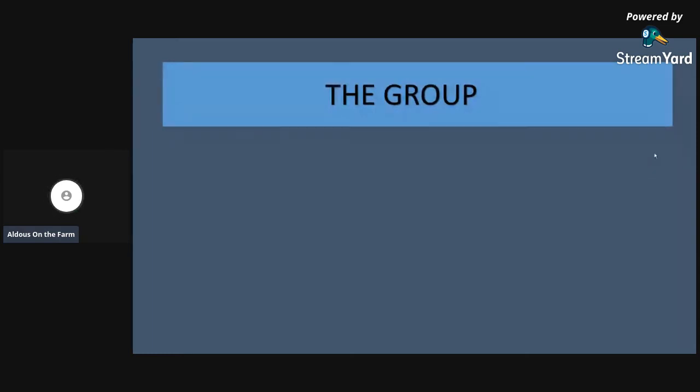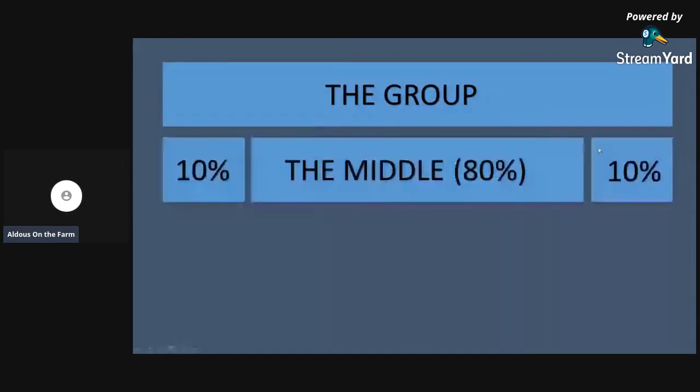And within that group you're going to have three distinct groups. This is slightly drifting away from the Asch conformity experiment, talking about some other psychological principles, but we're just going to throw them all in to discuss it. And that's the 80/10/10 rule.